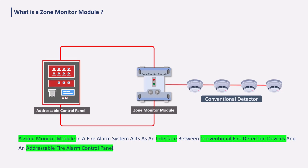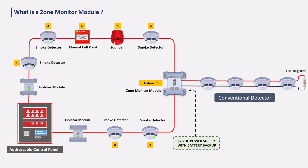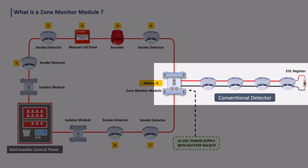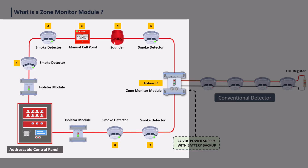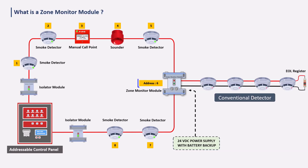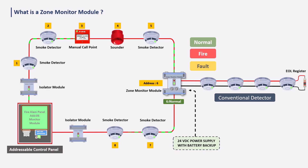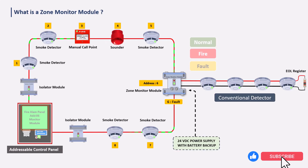If a conventional detector needs to be connected to an addressable fire alarm loop, then a zone monitor module is used. The zone monitor module monitors the two-wire conventional detector zone circuit. It is connected with the addressable fire alarm panel and also has a unique address. This means the zone monitor module converts the conventional zone signal into an addressable signal and reports the alarm, fault, and normal status of the circuit to the fire alarm panel.